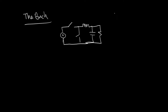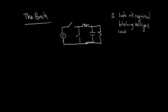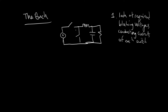Let's remind ourselves of the plan of attack. The first step is to look at the required blocking voltages and conducting currents of each switch. We'll define some positive voltage — we'll call this VQ1. This is Q1.